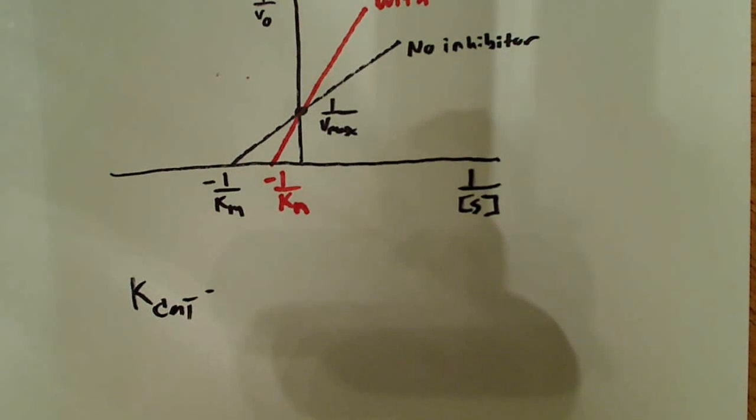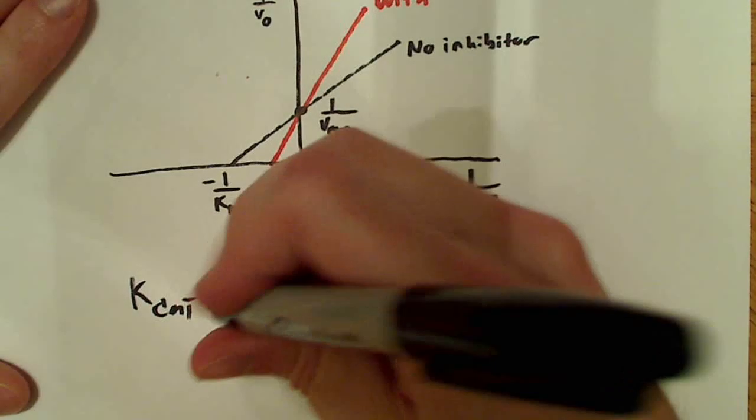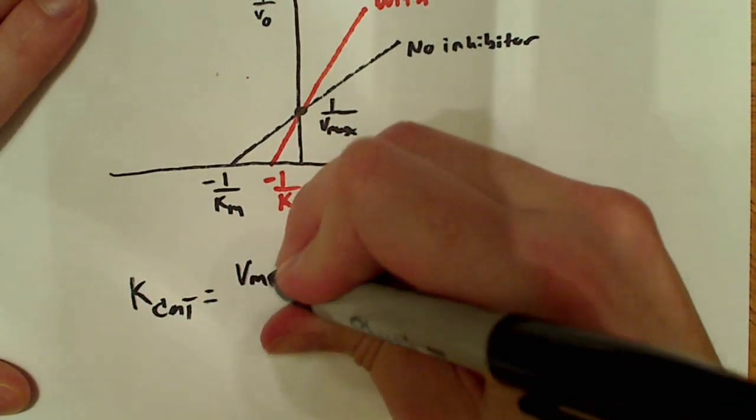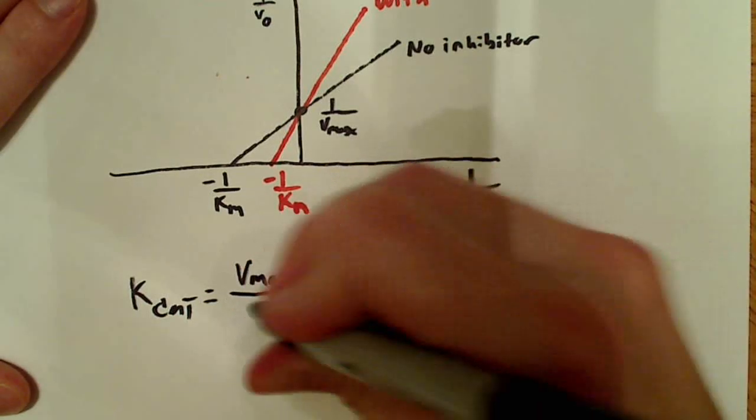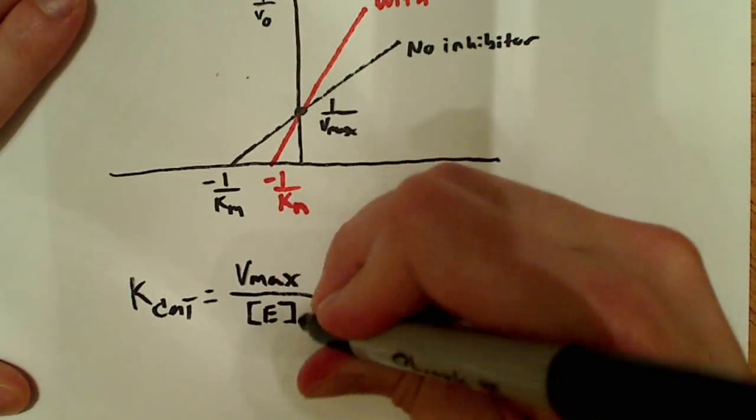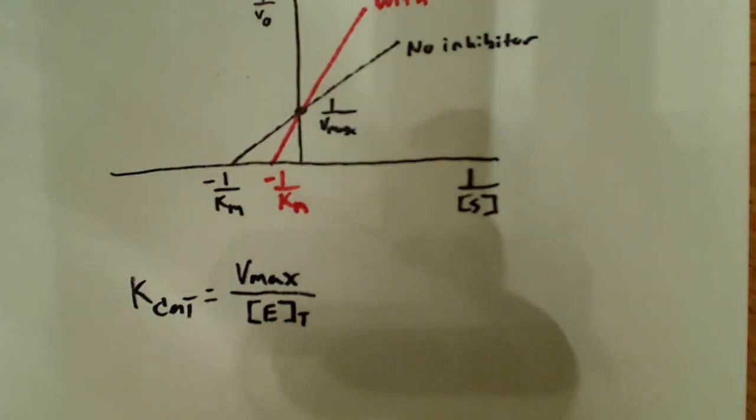And that's the number of reactions, the number of reactions one active site of the enzyme can catalyze per unit time. So, if I were asked to calculate that, I would say the Kcat is equal to the Vmax over the total concentration of enzyme.